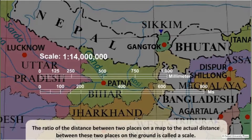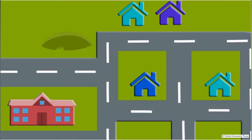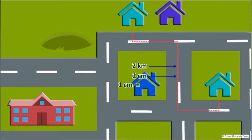The ratio of the distance between two places on a map to the actual distance between these two places on the ground is called a scale. The distance on a map is given in ratio to a smaller unit. For example, the distance between your home and your friend's house is 2 kilometers; however, on a map the same distance can be shown as 2 centimeters. It means 1 centimeter on the map is equal to 1 kilometer on the earth.